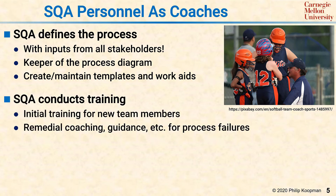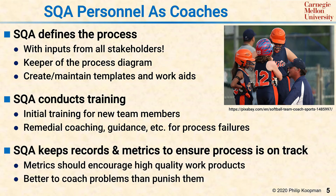SQA then conducts training — initial training for new team members, but also remedial coaching, guidance, or whatever is needed based on process failures. The emphasis is on making sure everyone has the ability to execute and understand the defined process. SQA also keeps records and metrics to ensure the process is on track. The point of metrics is not just to keep score for the sake of keeping score, but rather to provide tools and insight that allow the team to determine if there's a systematic weakness in their process or their execution so they can fix it and produce better software.